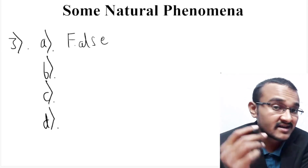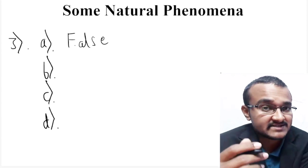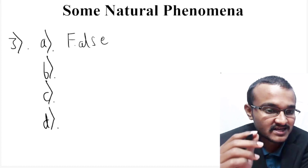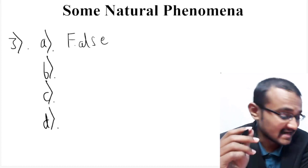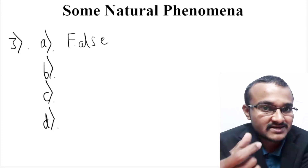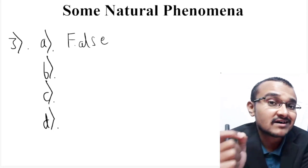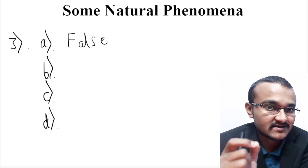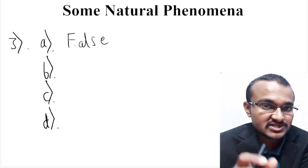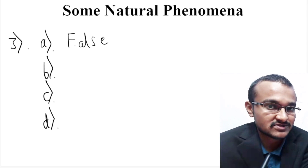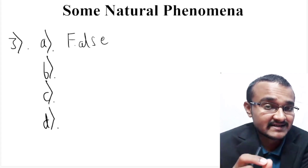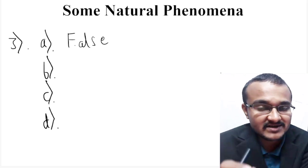Coming to the third question, they have asked true or false. The first statement is that like charges will attract each other — but this is actually not the case. Because always unlike charges attract each other. If you have a positive charge and a negative charge, then they can attract. But if you have positive-positive or negative-negative, they cannot attract. So like charges will never attract each other. The answer is false.